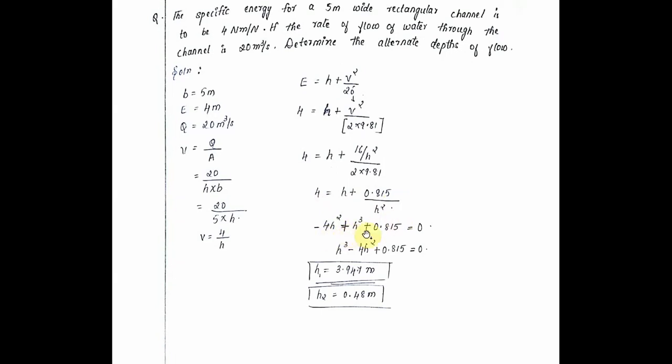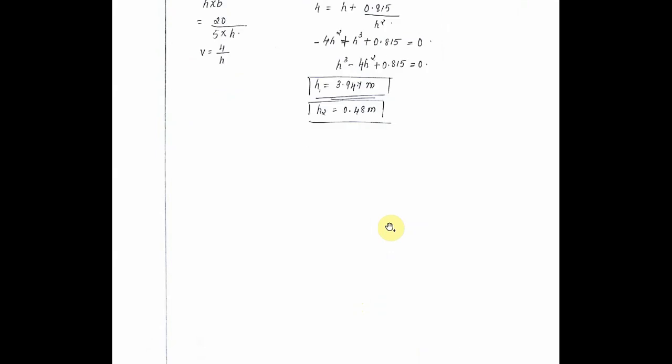Therefore h cubed minus 4h squared plus 0.815 is equal to 0. Solving this equation gives h1 equals 3.947 meters and h2 equals 0.48 meters. Thank you.